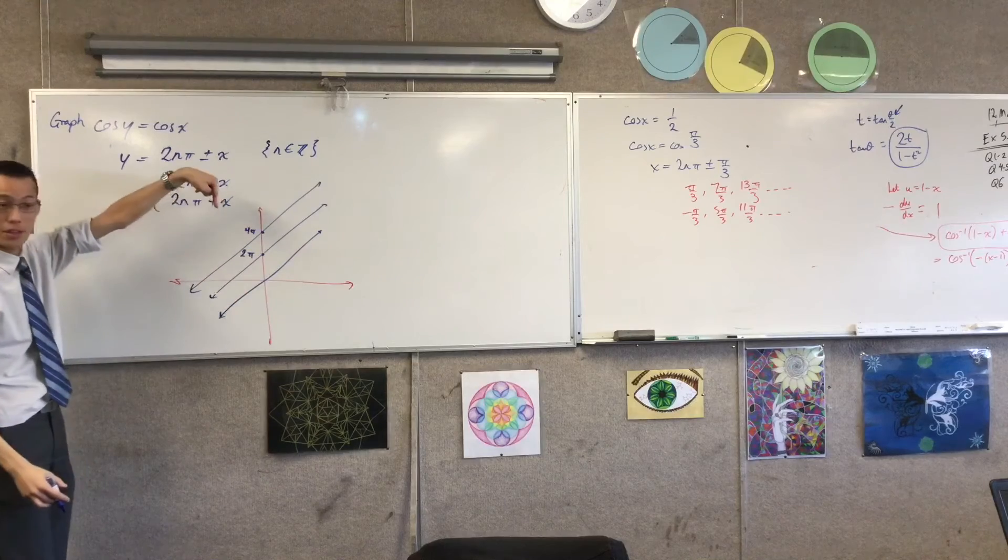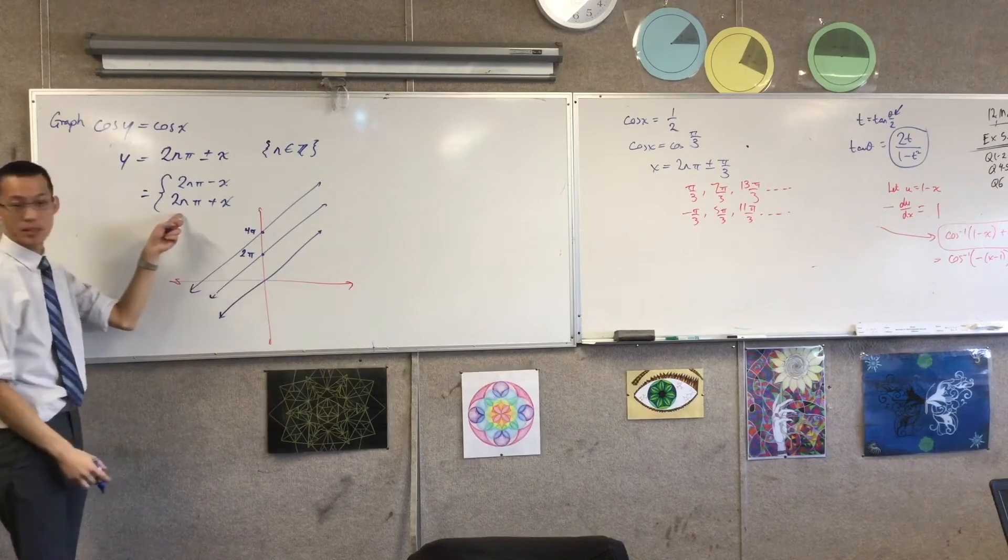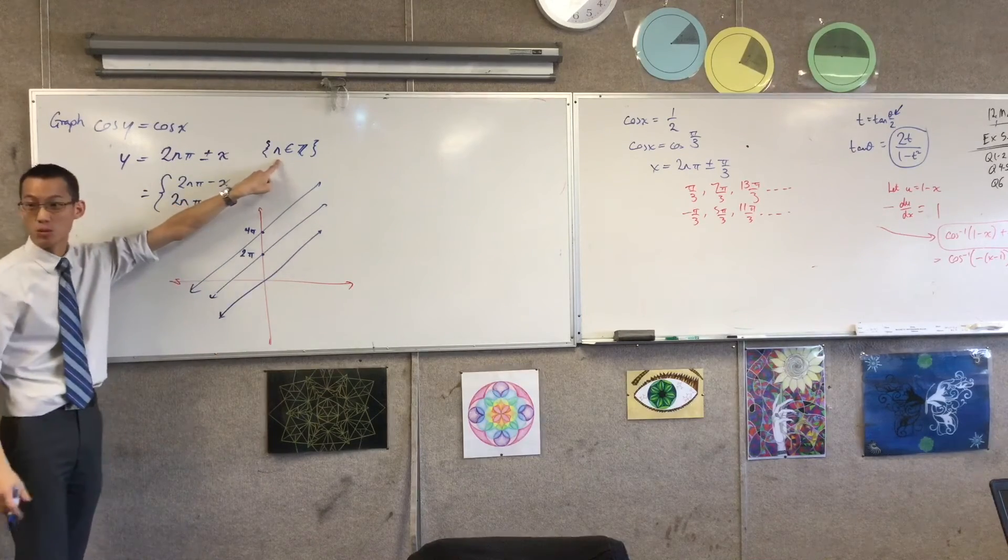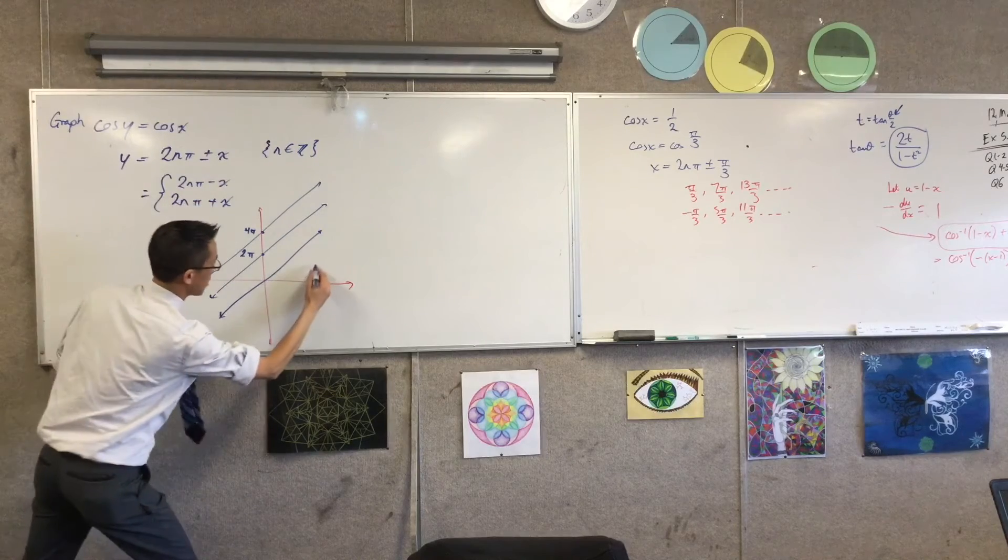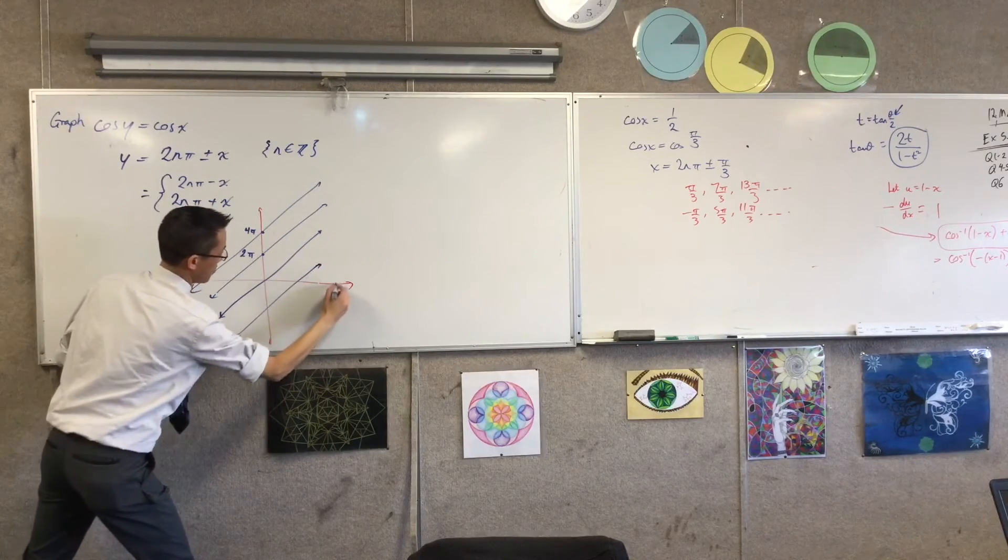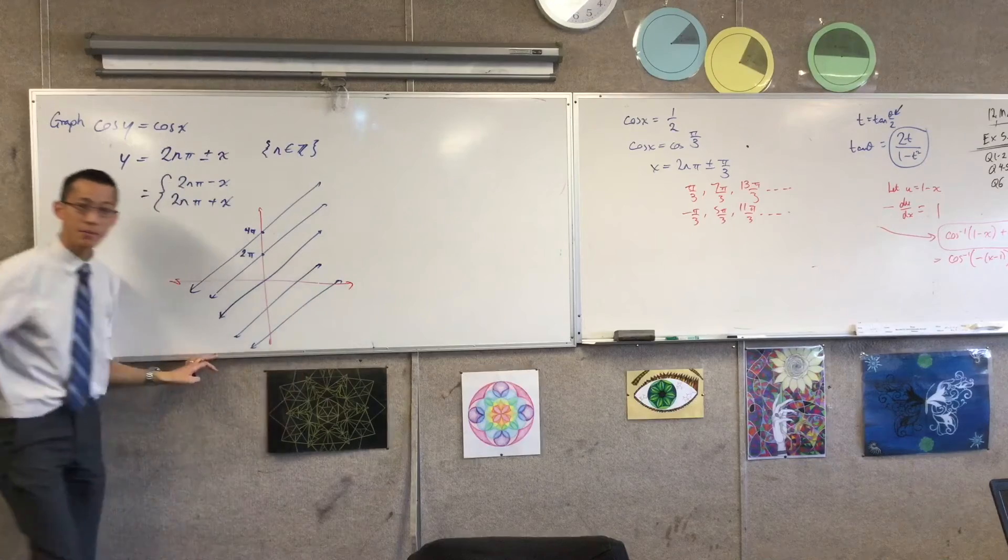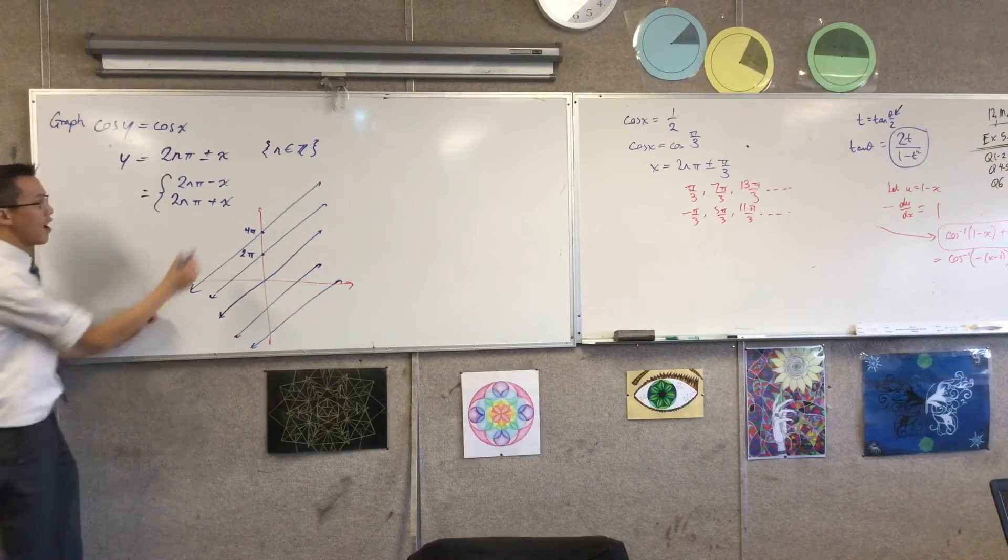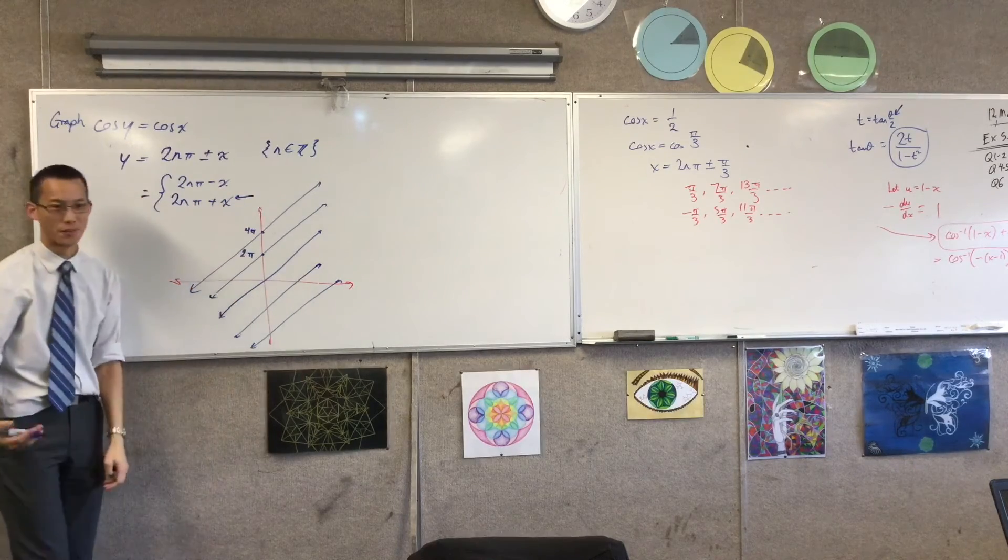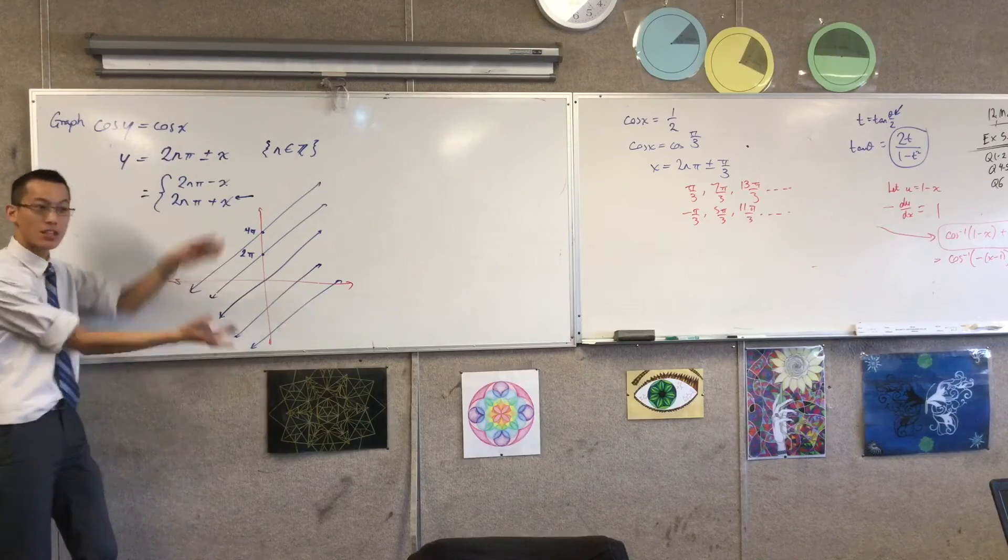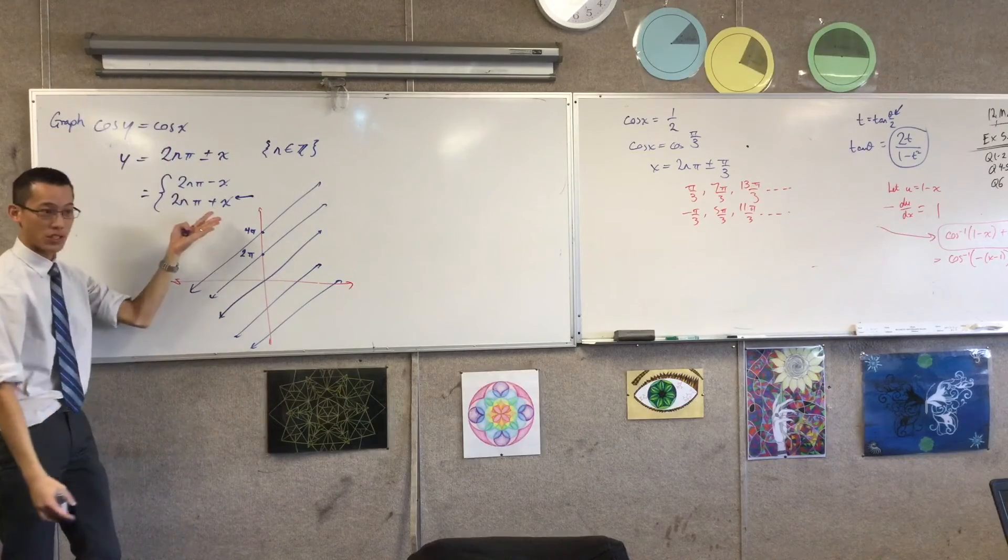And of course, this is also going to go off in the negative direction, because there's no reason why I can't put in n equals less than zero. So I'm going to get these guys as well. Okay, so here are all of these guys. Here are five of them, okay? And these go on forever. Those are the positive cases.